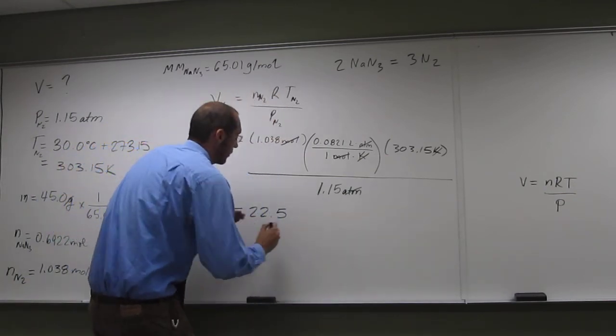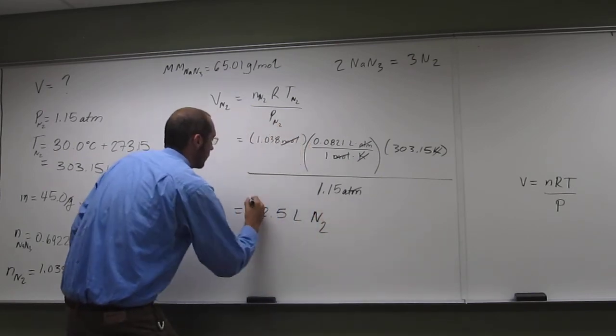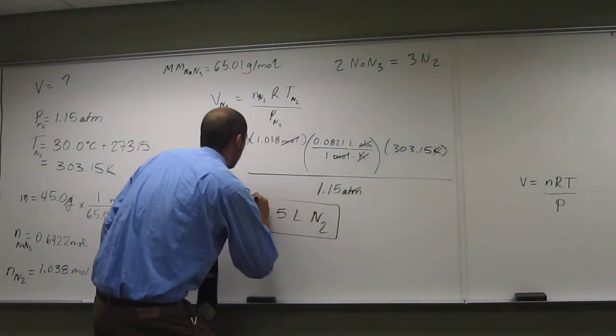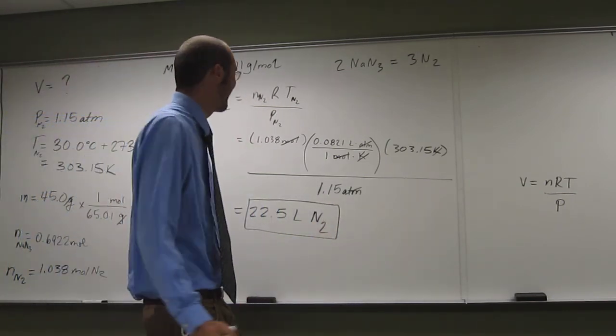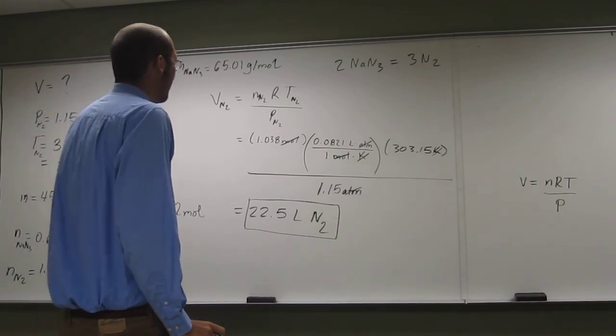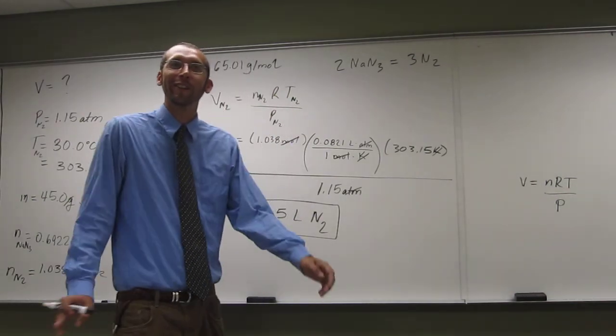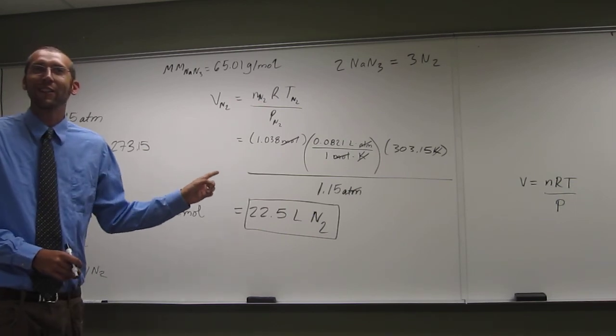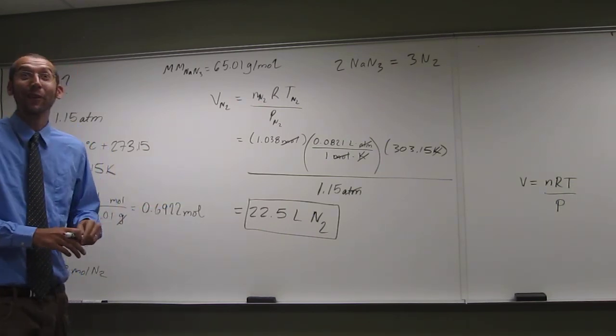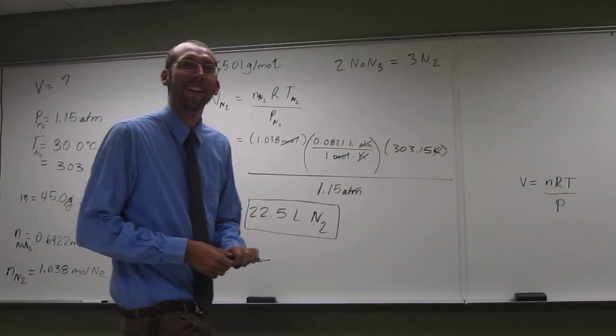So the volume of nitrogen is going to be 22.5 liters of nitrogen when your airbag goes off. So that's going to be enormously huge if you think about that. But that's good because you want your head to ricochet off of something that's bouncy instead of the steering wheel or whatever. So are there any questions about that one? You guys, if I put this on the test you should be able to get it. Or something similar because it's not going to be exactly this problem. It would be a much more exciting problem than an airbag deploying if you can imagine that.